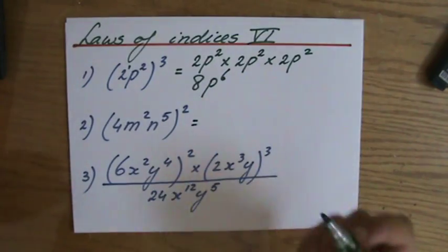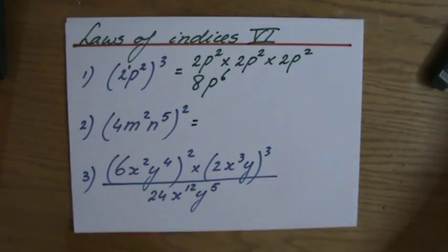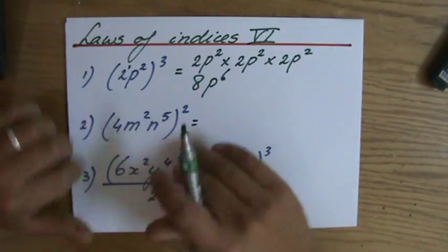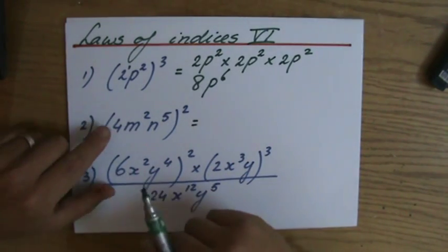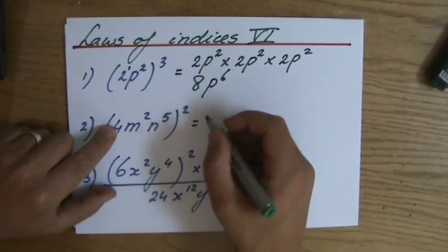But a shortcut is always nice to take, especially when you're a little bit tired. So let's have a look here. But don't go too fast. It's 4 to the power of 2. 16.